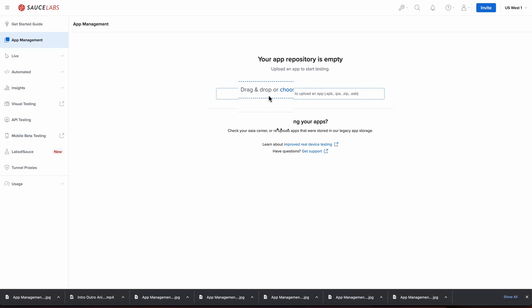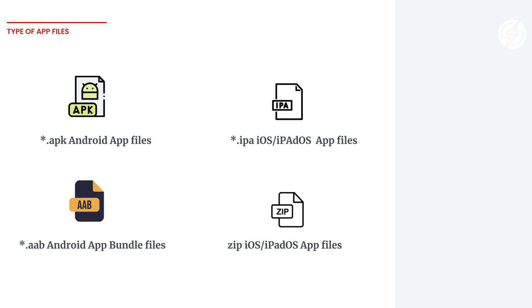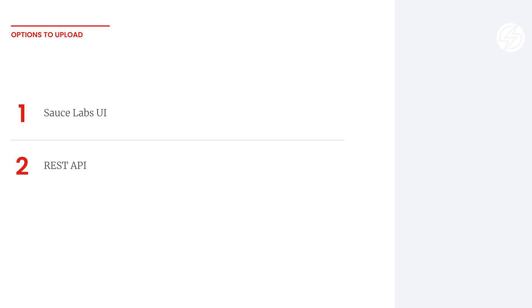To upload an app, you can either drag and drop an app or browse for and select the file to upload. We currently support Android application package files, Android app bundle files, and iOS app store package files, or zip iOS app files. The zip iOS app files are mainly for simulator builds, and zip files are parsed to determine whether a valid app bundle exists. Keep in mind that non-app files uploaded are not currently supported in the UI, but can be uploaded through the API.